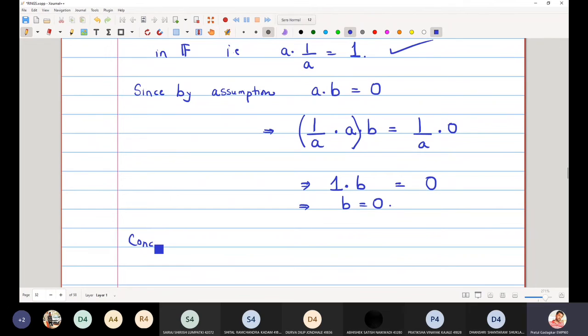Hence, the conclusion of this theorem is that if AB is 0, then either A is 0 or B is 0. Because we have assumed that A is not equal to 0.